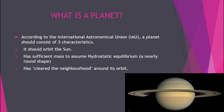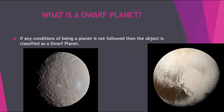The third one is it has cleared the neighborhood around its orbit. This third condition is the latest update to the definition of a planet. But you might be wondering — planet is understandable, but what is a dwarf planet?